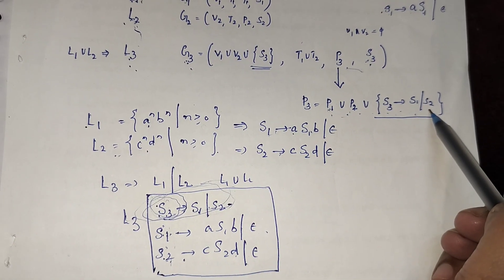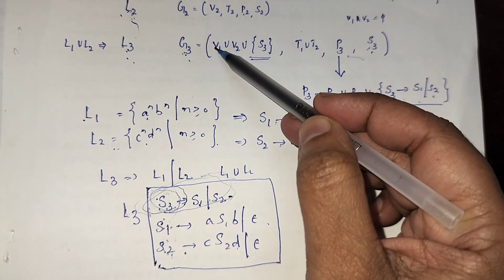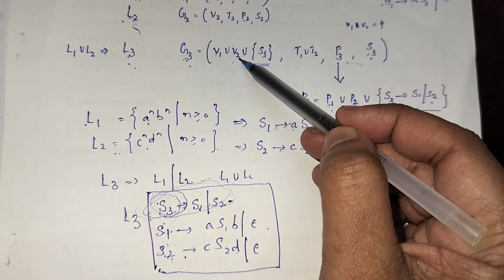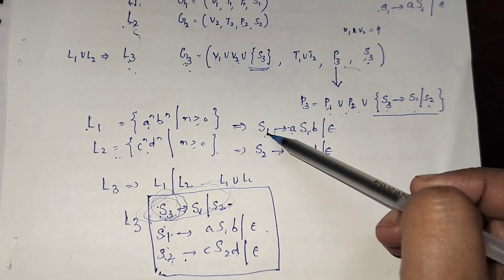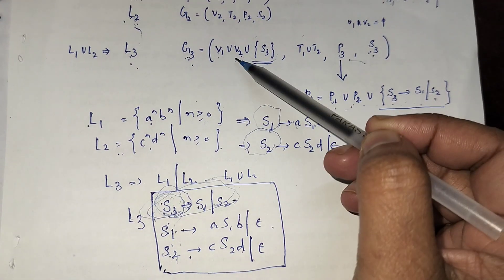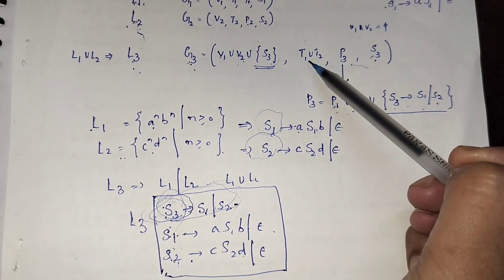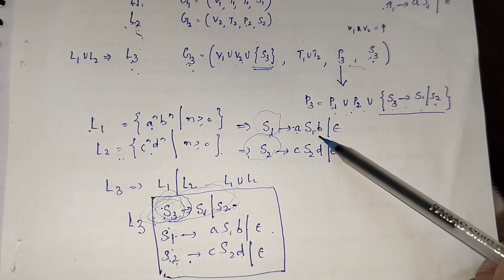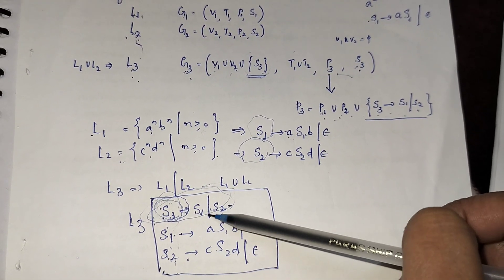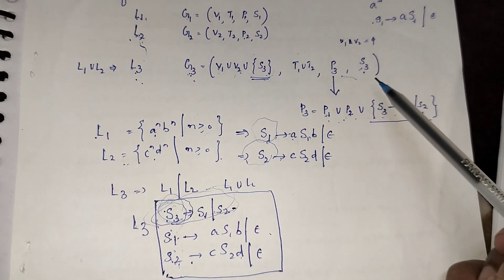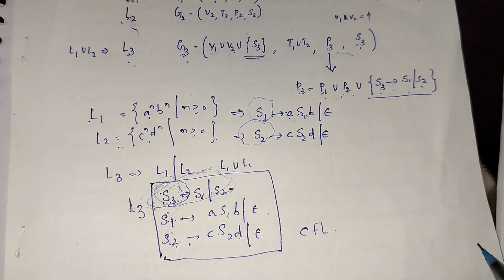In grammar G3, the non-terminals are S1, S2, and the new start symbol S3. That's why V3 = V1 union V2 union {S3}. The terminals are a, b, c, d — T1 = {a, b} and T2 = {c, d}. P3 contains productions from both grammars plus the extra production for S3. This grammar G3 is a context-free grammar, so L3 is also a context-free language.